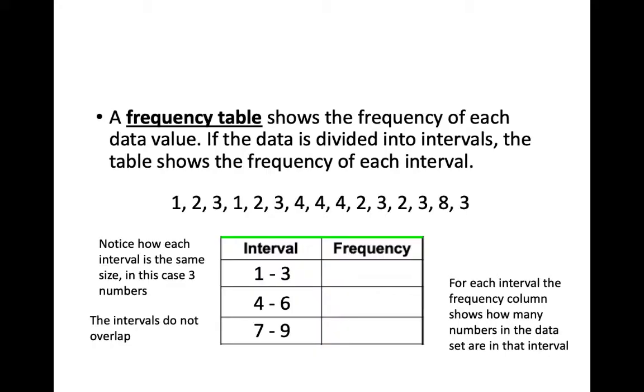In the frequency column for each interval, we show the total number of numbers that are in that interval from our data set. If you count all the 1s, 2s, and 3s, you'll come up with a total of 11.